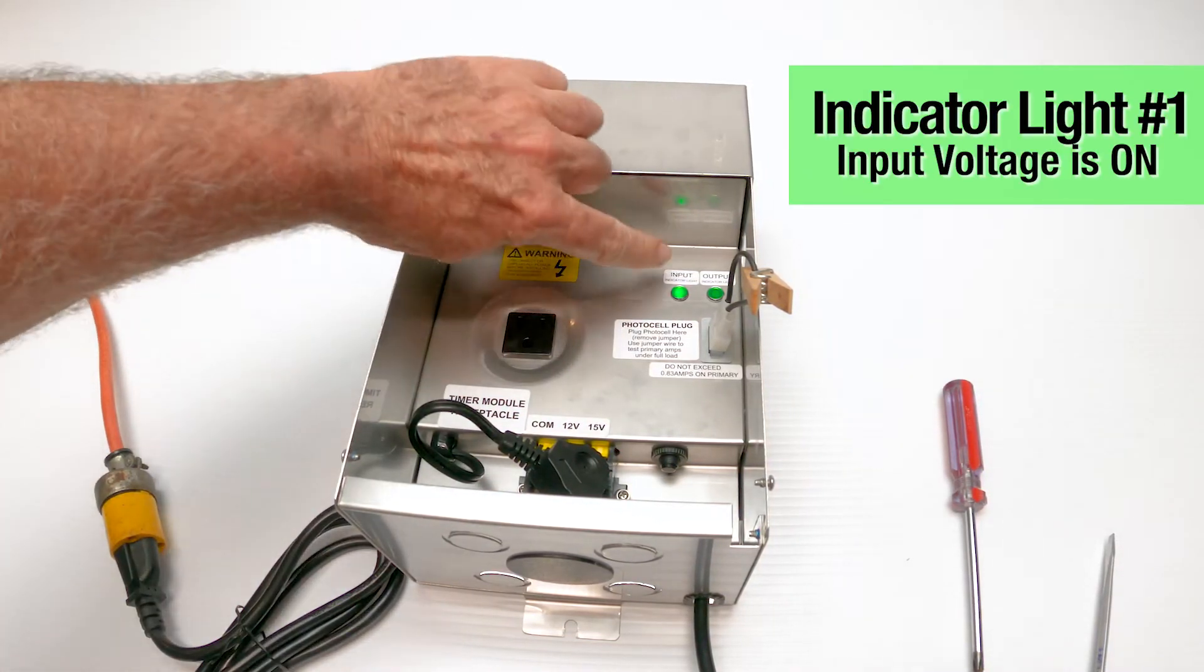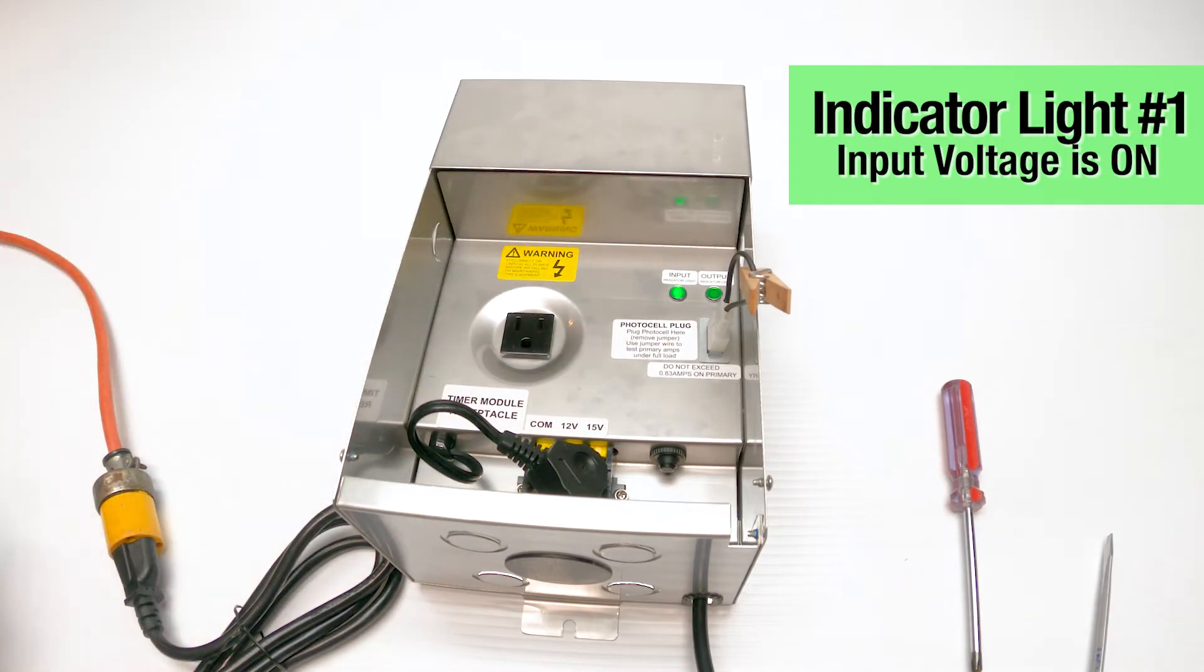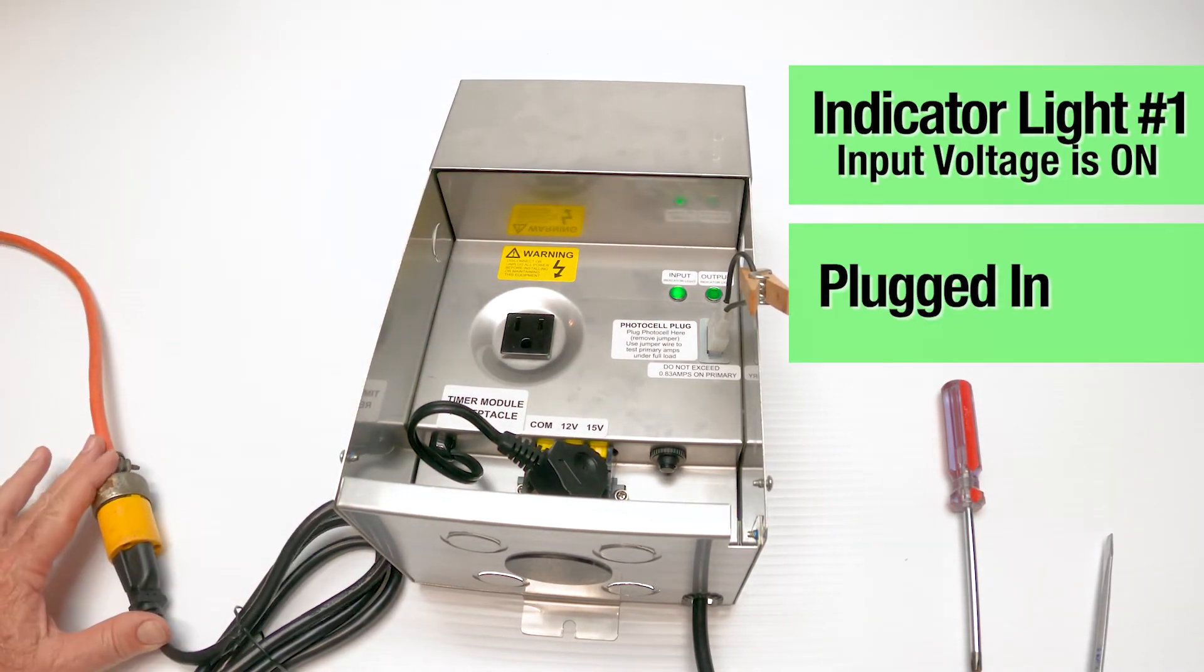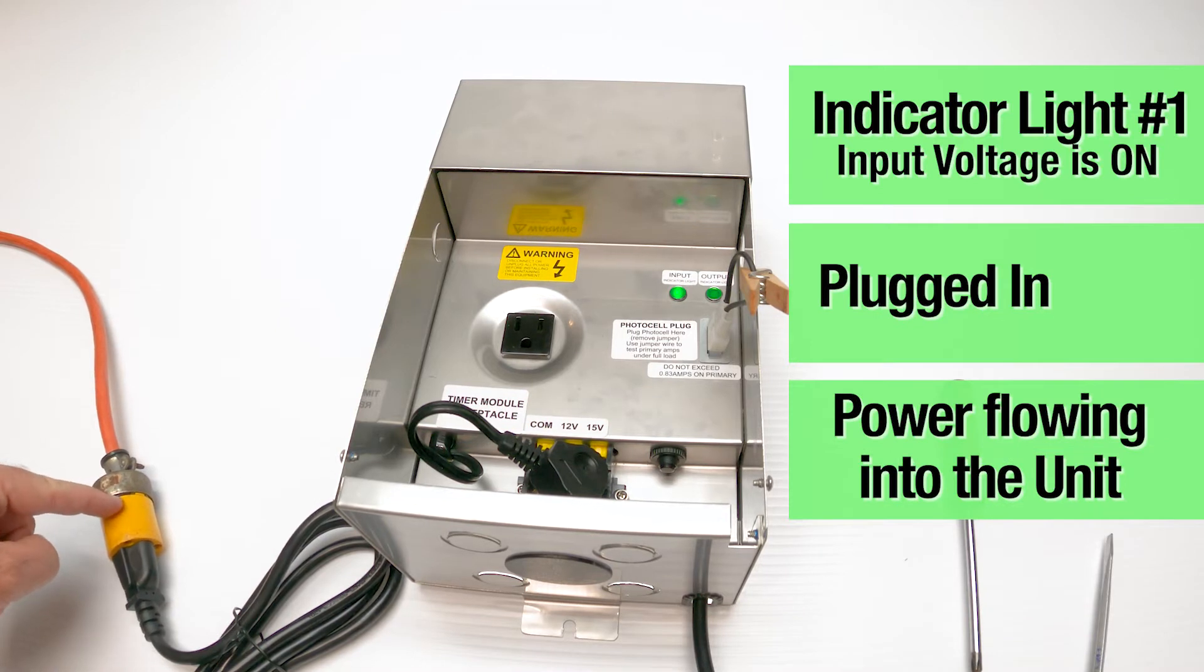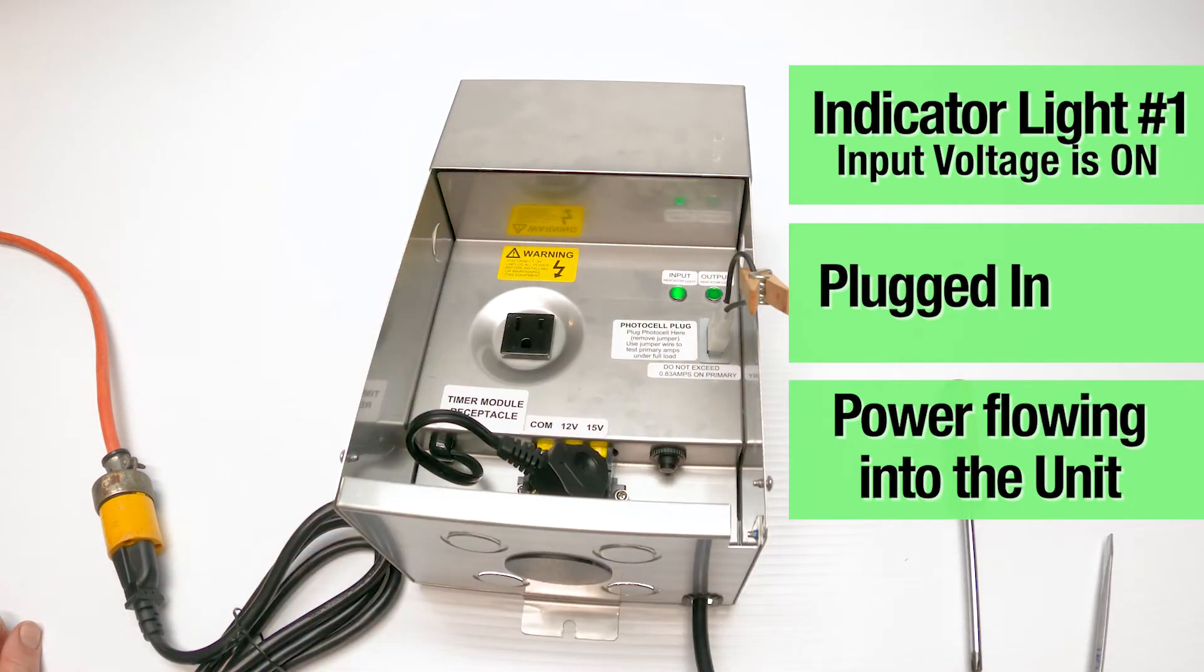So I'm going to plug the unit in. And the first thing I'm going to notice is the input light just went on. What does that tell us? That tells us that the unit's plugged in. It tells me there's power in this extension cord, 120 volts passing through this plug going into the unit. Right now this unit has 120 volts in it.